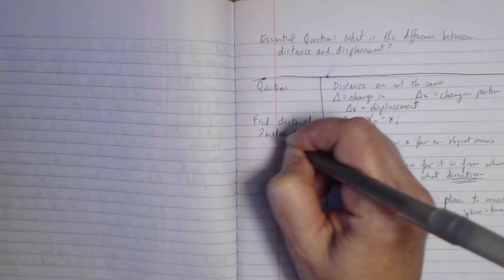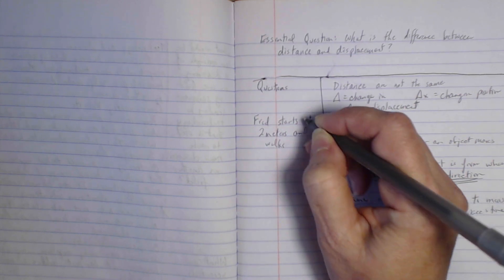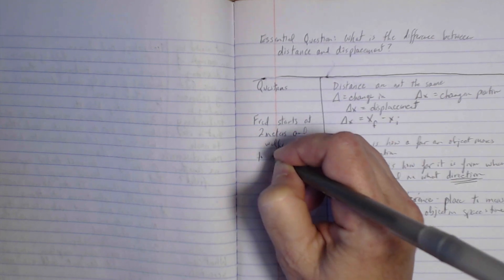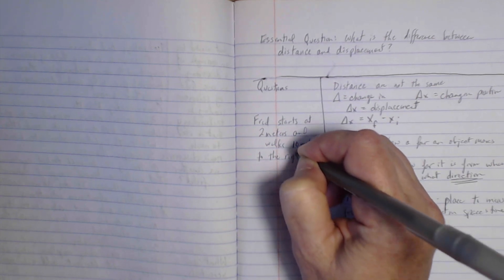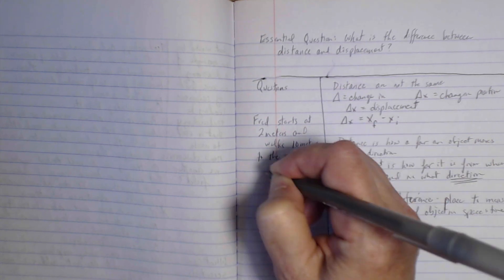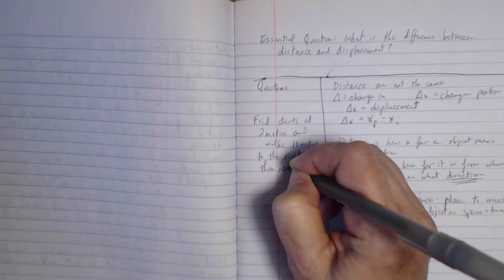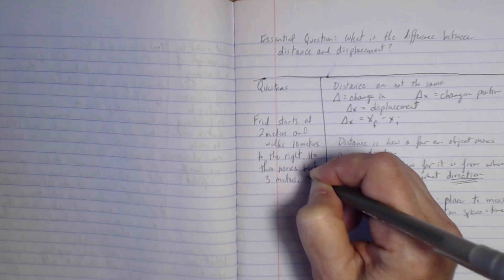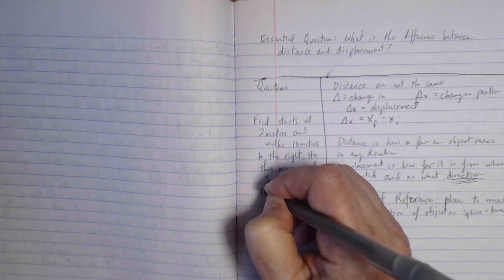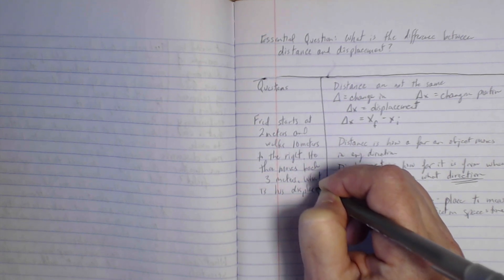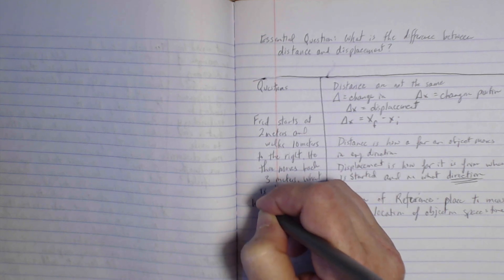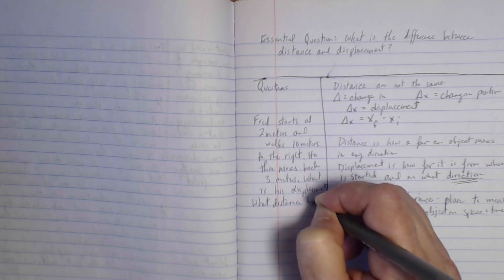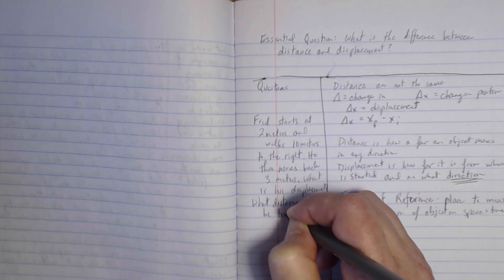Let's write out a question that might be something like Fred starts at two meters and walks 10 meters to the right. He then moves back three meters. What is his displacement? What distance has he traveled? Do you know how you would solve that problem? If you do, then you do know what the difference is between distance and displacement.